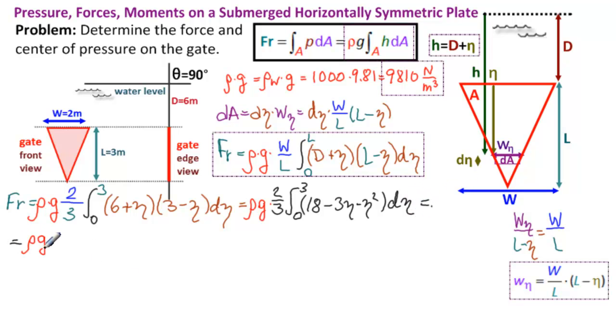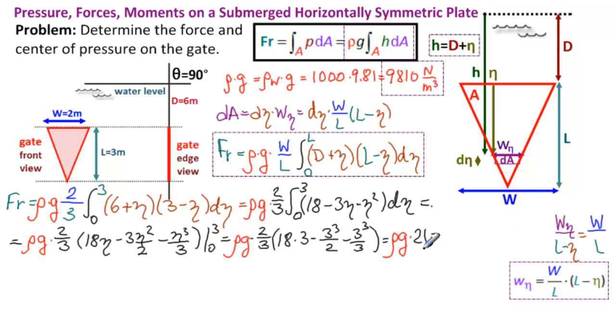Rho G times 2 thirds. This is a straightforward integral. 18 eta minus 3 eta squared over 2 minus eta cubed over 3, from 0 to 3. We have 18 times 3 minus 3 cubed over 2 minus 3 cubed over 3. That's rho G times 21. And 21 times 9,810 is 206,010 newtons. So that gives us our first answer.